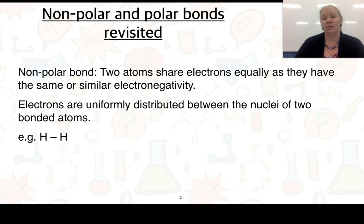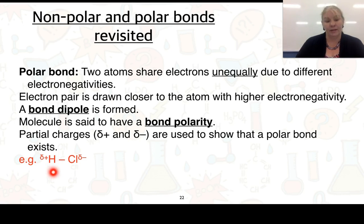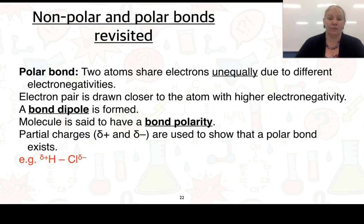When atoms have the same or similar electronegativity, electrons are uniformly distributed around the nuclei of the two bonded atoms — for example, H₂ where both atoms attract electrons equally. In a polar bond, two atoms share electrons unequally. In hydrogen chloride (HCl), chlorine attracts valence electrons much more readily than hydrogen, so we use the partial positive and partial negative notation as explained in a previous video.